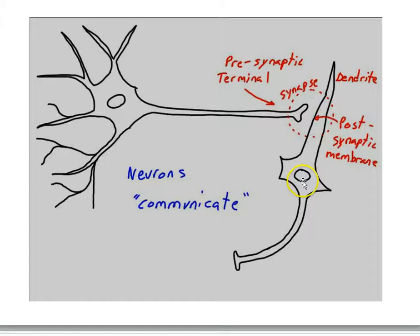When the electrical disturbance — the action potential — gets down to the terminal, there is a gap between the terminal and the target cell. That gap is called the synaptic gap, and this junction is called a synapse. We can define the post-synaptic membrane and the pre-synaptic terminal. This is where the chemical nature of neurons comes into play.